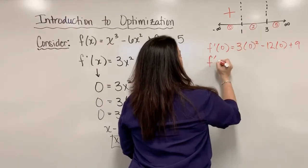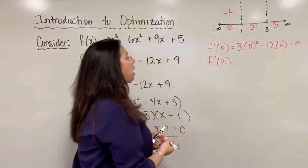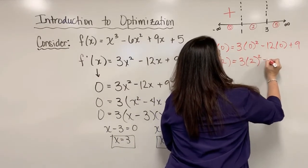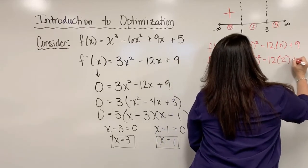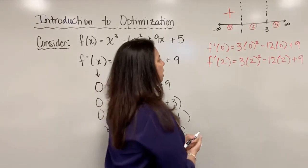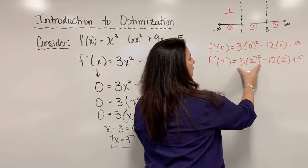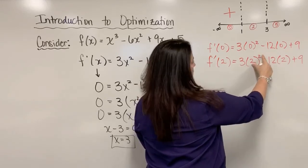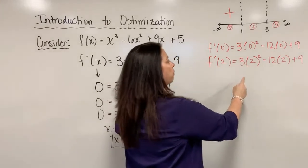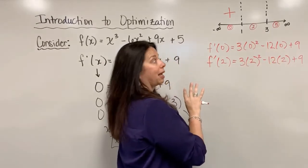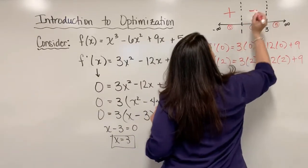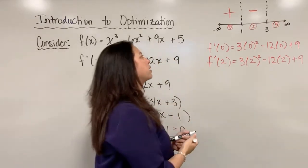And I continue on. I need to test my second value, f prime of 2. And so I evaluate my derivative there for 2. And we are again interested in seeing, do I have a positive value or negative value come out of this? And so when I actually calculate this value, squaring the 2, give me 4 times the 3 is 12. But minus 24, I'm already negative 12 plus 9, still negative. So again, I don't care what the actual value is, just that it is negative.